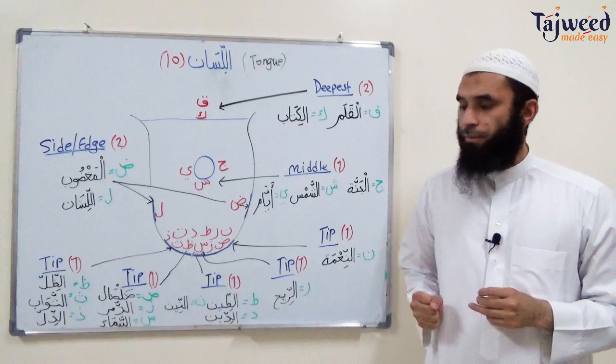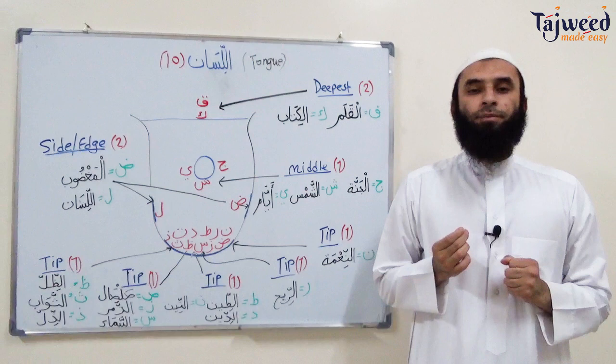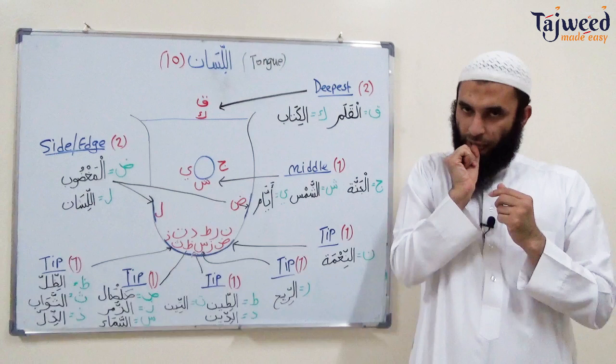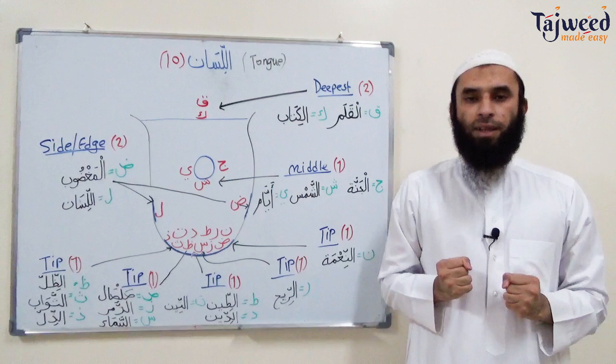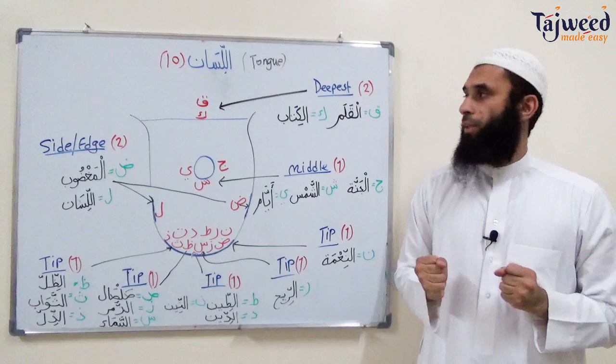The last three letters are Fa, Zhal, and Tha, as in al-zil and al-thamarat or al-thawab. The makhraj point is the tip of the tongue touching the bottom edges of the front two teeth — the tip touches the edge of the incisors.